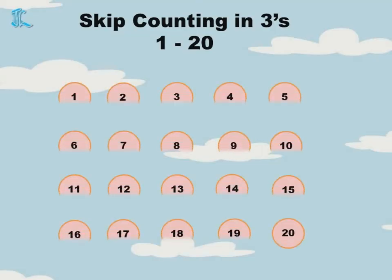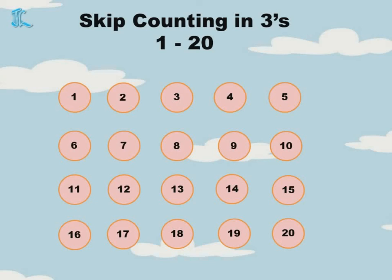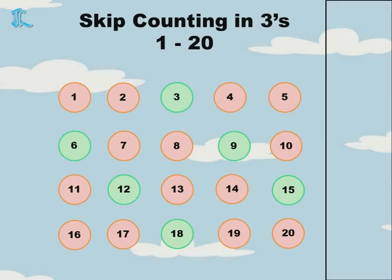Now let's do Skip Counting once again for numbers 1 to 20. Whatever number you get for Skip Counting by Threes, you will color it. Leave 1 and 2, color 3; leave 4 and 5, color 6; leave 7 and 8, color 9; then 12, 15, 18. On the right-hand side, write the Skip Counting of threes: 3, 6, 9, 12, 15, 18, 21, 24, 27, 30.